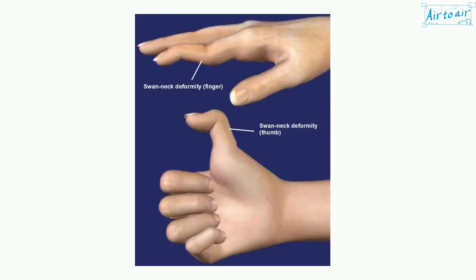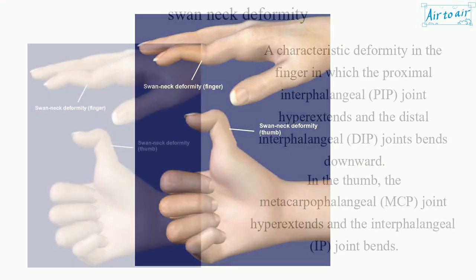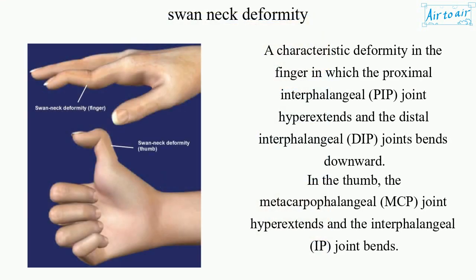Swan Neck Deformity: A characteristic deformity in the finger in which the proximal interphalangeal (PIP) joint hyperextends and the distal interphalangeal (DIP) joint bends downward.